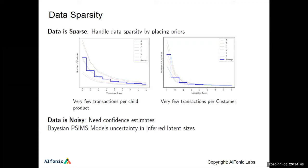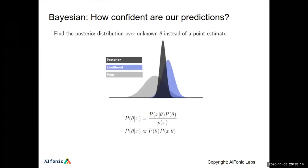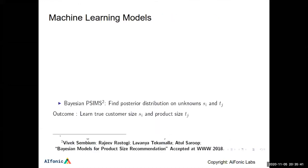We needed a notion of confidence for our estimates. We found a Bayesian model works better here, because Bayesian modeling is an automatic way of handling uncertainty when data is noisy and sparse. Instead of a point estimate, you find a distribution over what you're trying to find. If the variance of the distribution is high, you're not confident; if it's peaked, you are confident. This lets us decide when to show a recommendation and when to stay silent. A second model incorporating this was published in 2018.